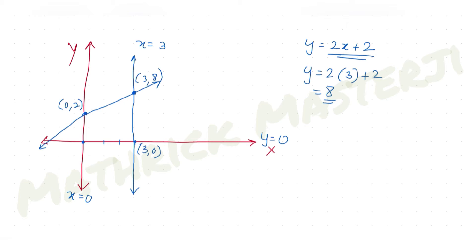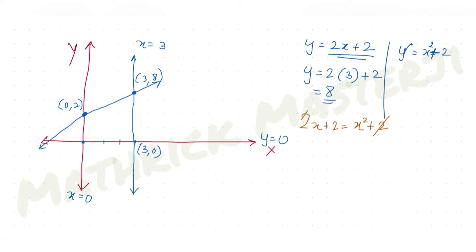Now let's plot the parabola y equals x squared plus 2. Its y-intercept is also 2, so it passes through (0, 2). To find the intersection of the line and parabola, we solve 2x plus 2 equals x squared plus 2. The 2s cancel, giving x squared equals 2x, so x squared minus 2x equals 0.